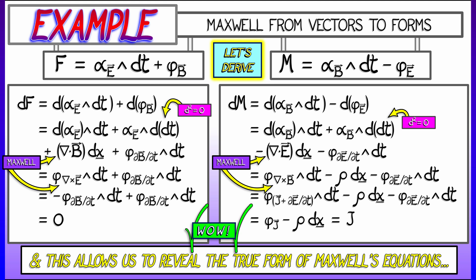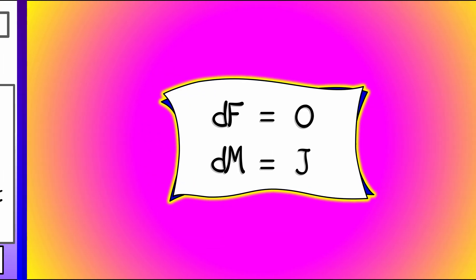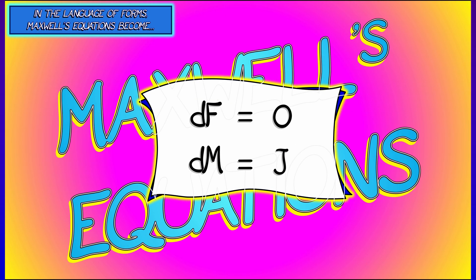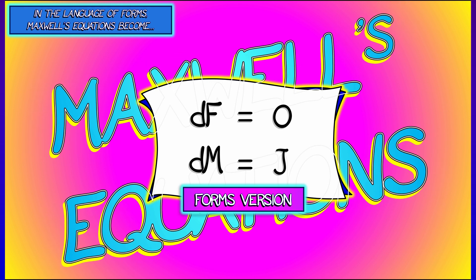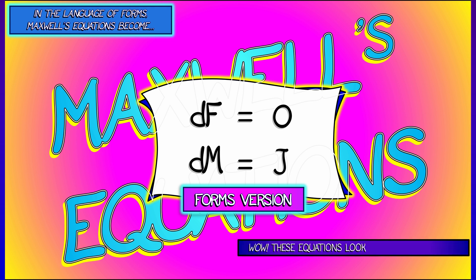Ah, so after all that work, what we see is the forms version of Maxwell's equations. This elegant version that says df is zero, and dm is j. That's so, that's so beautiful. That's so nice. You know, if you're going to get a Maxwell's equations tattoo, definitely get this version and not the other one with the four equations and all the funny symbols.